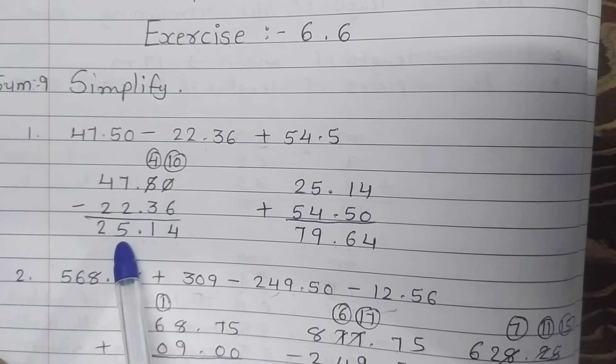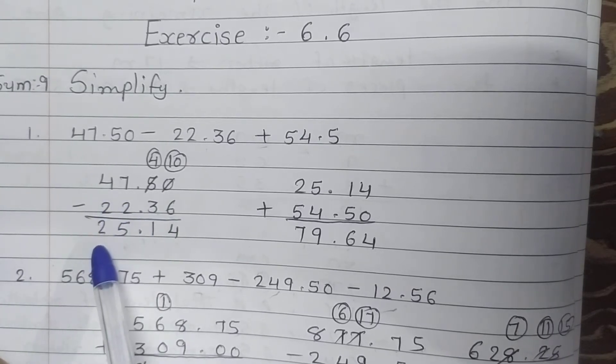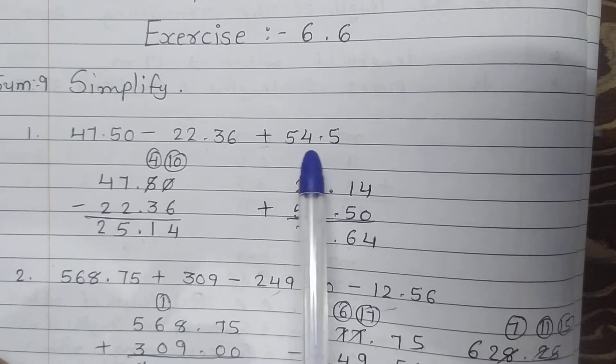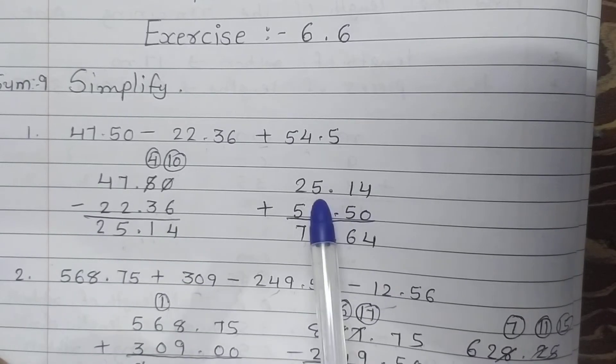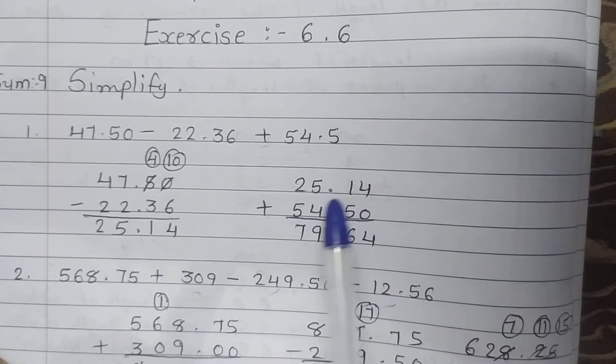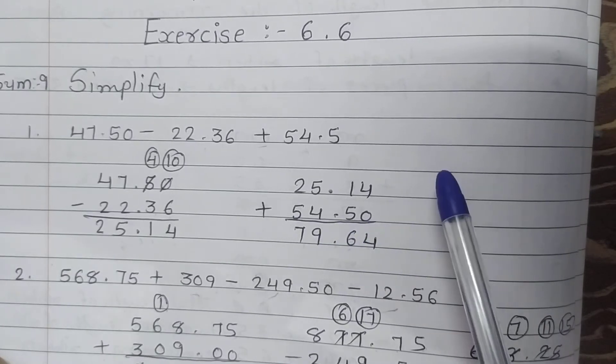Now 7 minus 2 is 5, and 4 minus 2 is 2. Now students, we will add 54.5 into 25.14. So 25.14 plus 54.50. Let us do addition.